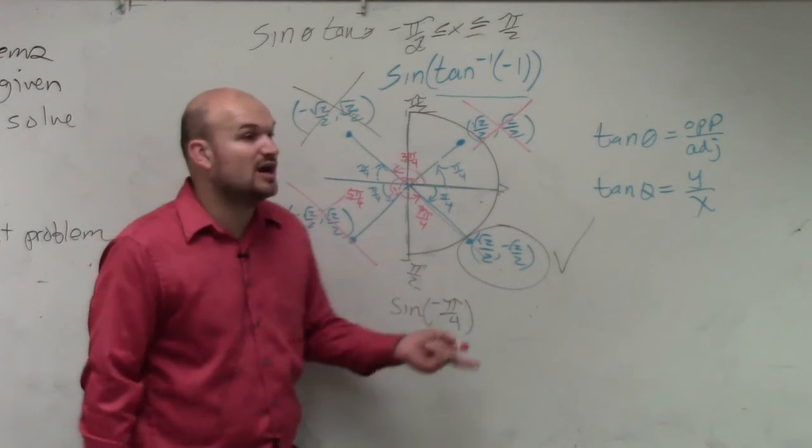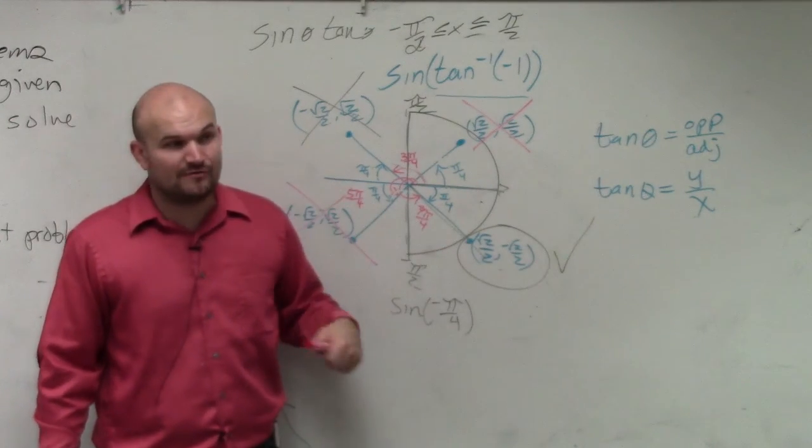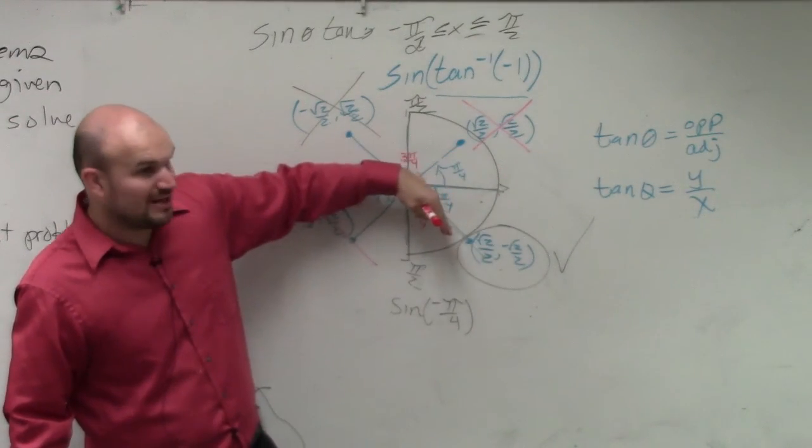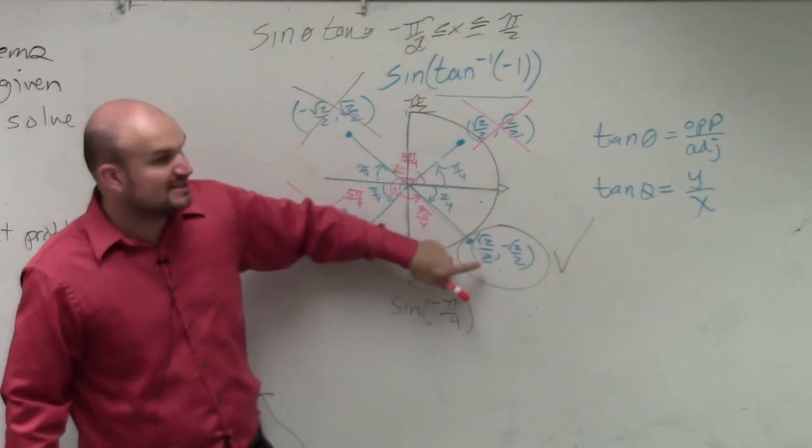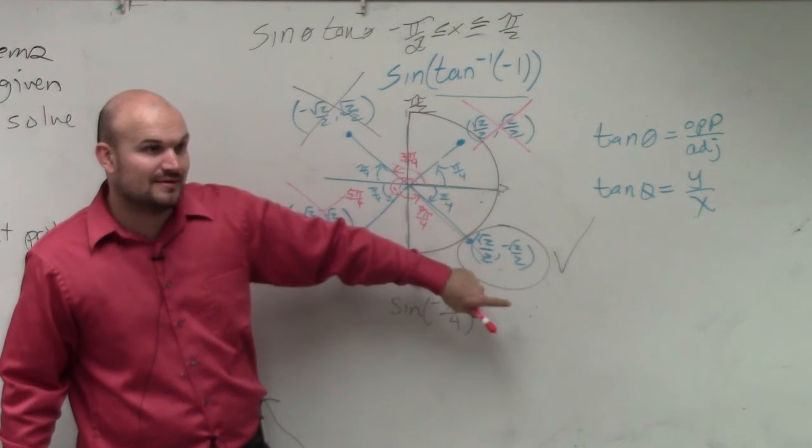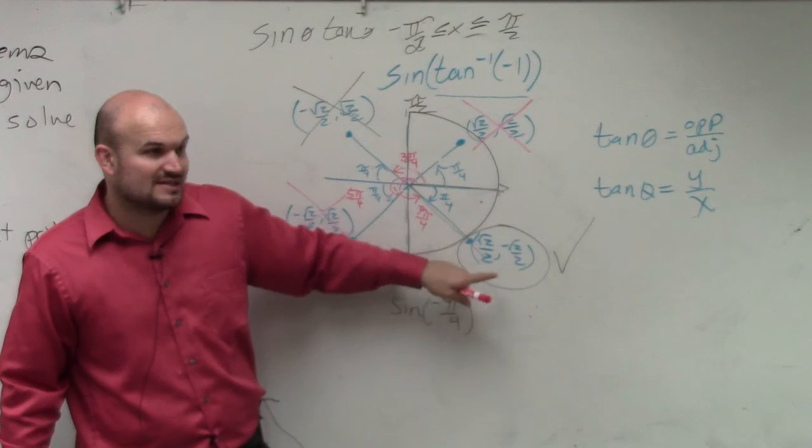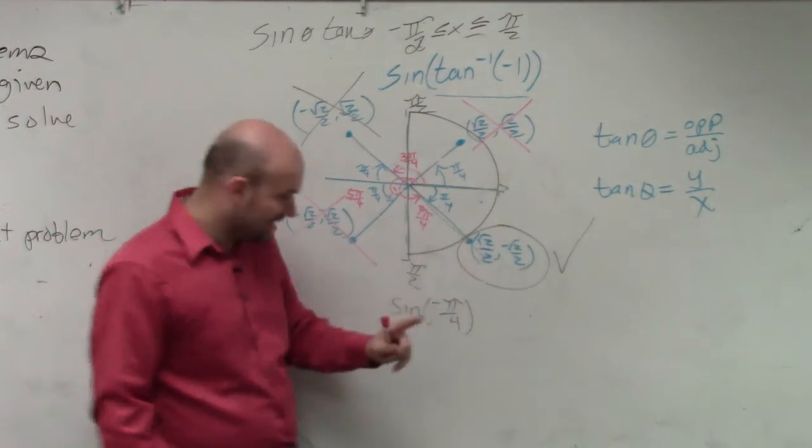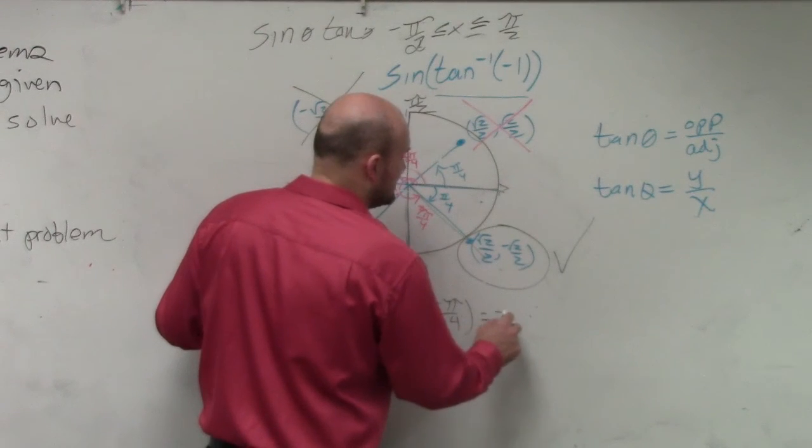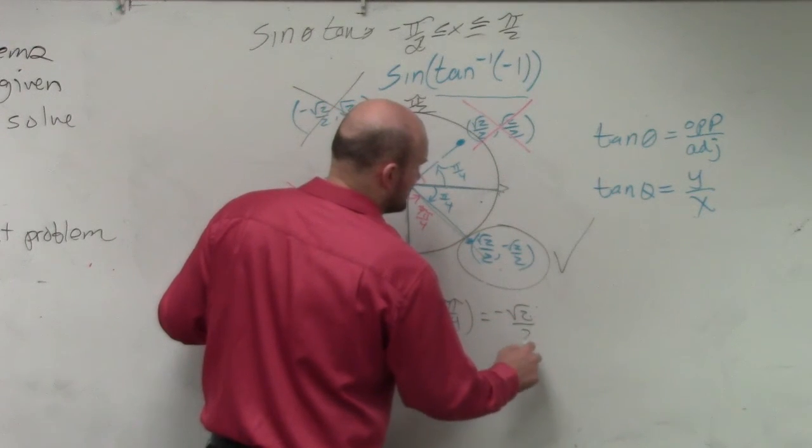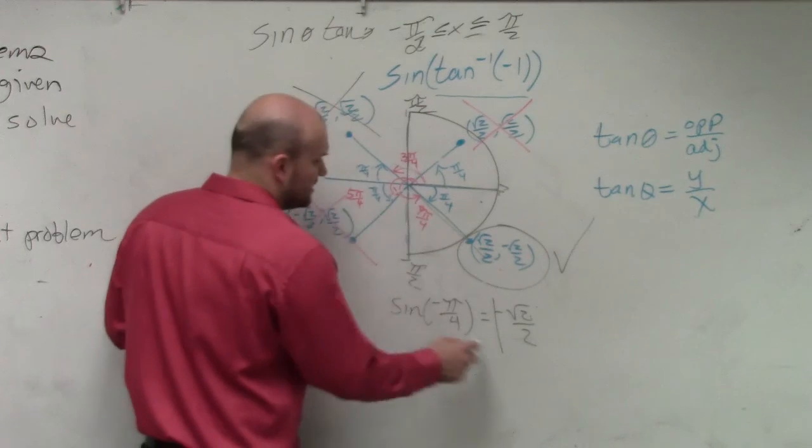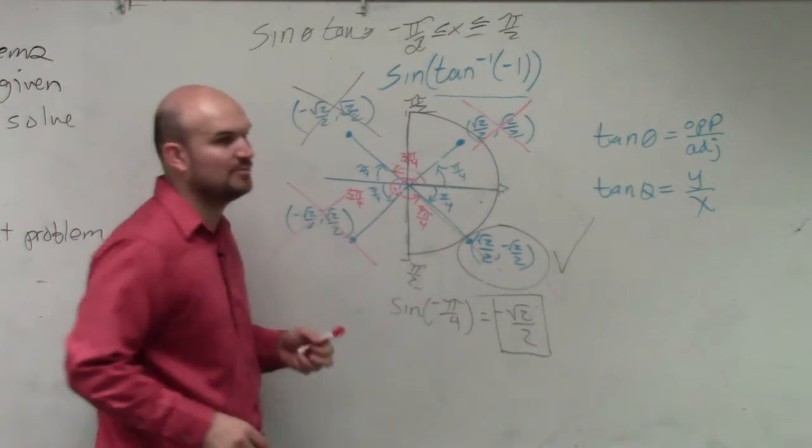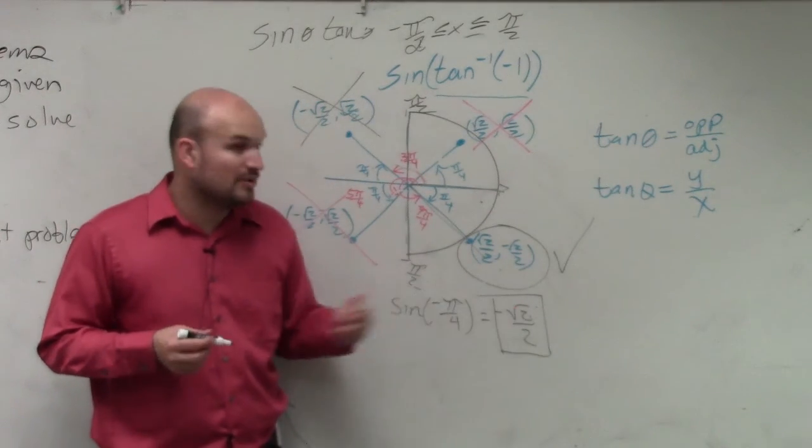Now we need to figure out what is the sine of negative pi over 4. So we go and look at the point of negative pi over 4. What is the sine of this coordinate point? When the point's on the unit circle, what is the sine of this? What does sine represent? Sine represents the y-coordinate of the point on the unit circle. That's the point on the unit circle.